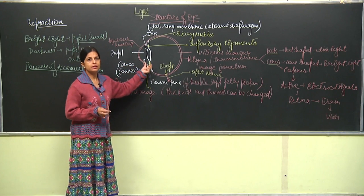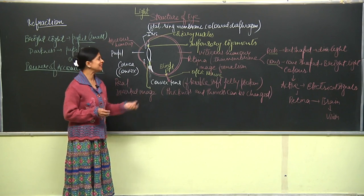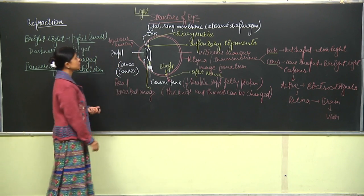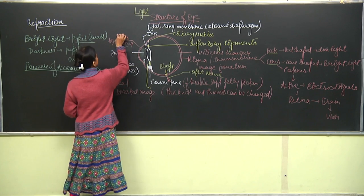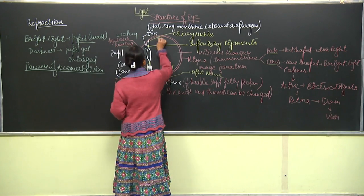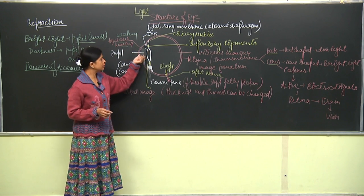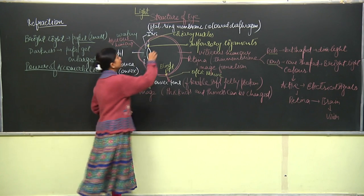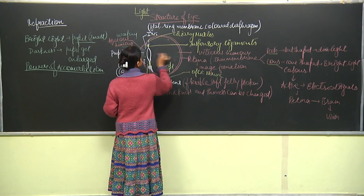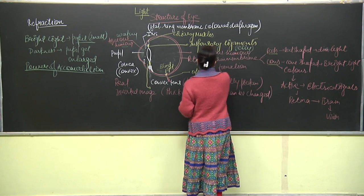There are two kinds of liquids present in the eye. One is a very watery liquid known as aqueous humor, present in the front part of the eye near the pupil area. Behind the lens, between the lens and the retina, a jelly-like liquid is filled, which is known as vitreous humor.